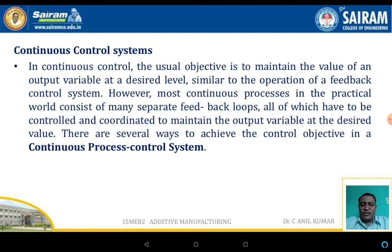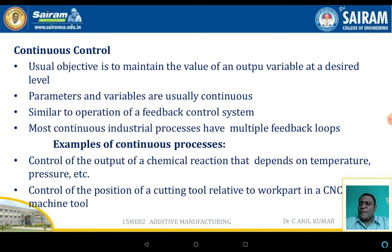The several ways to achieve the control objectives in a continuous process control system: the continuous control system's objective is to maintain the value of the output variable at a desired level. The parameters as well as the various variables should be continuously monitored, similar to the operation of the feedback control system. Most continuous industrial processes have multiple feedback control loops.